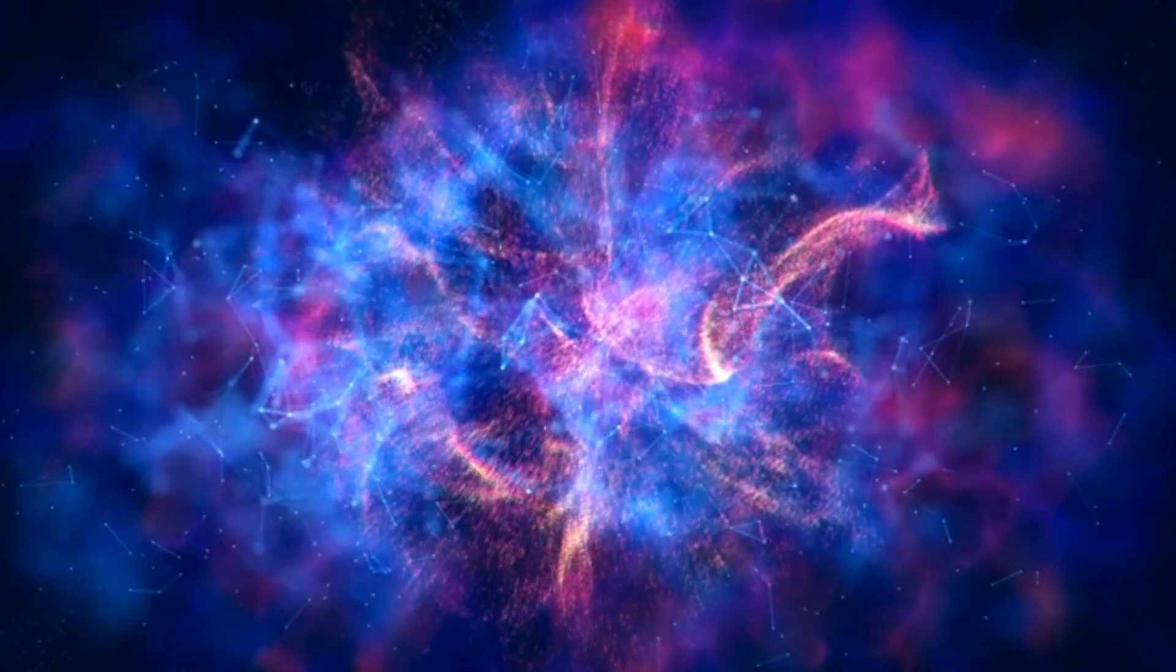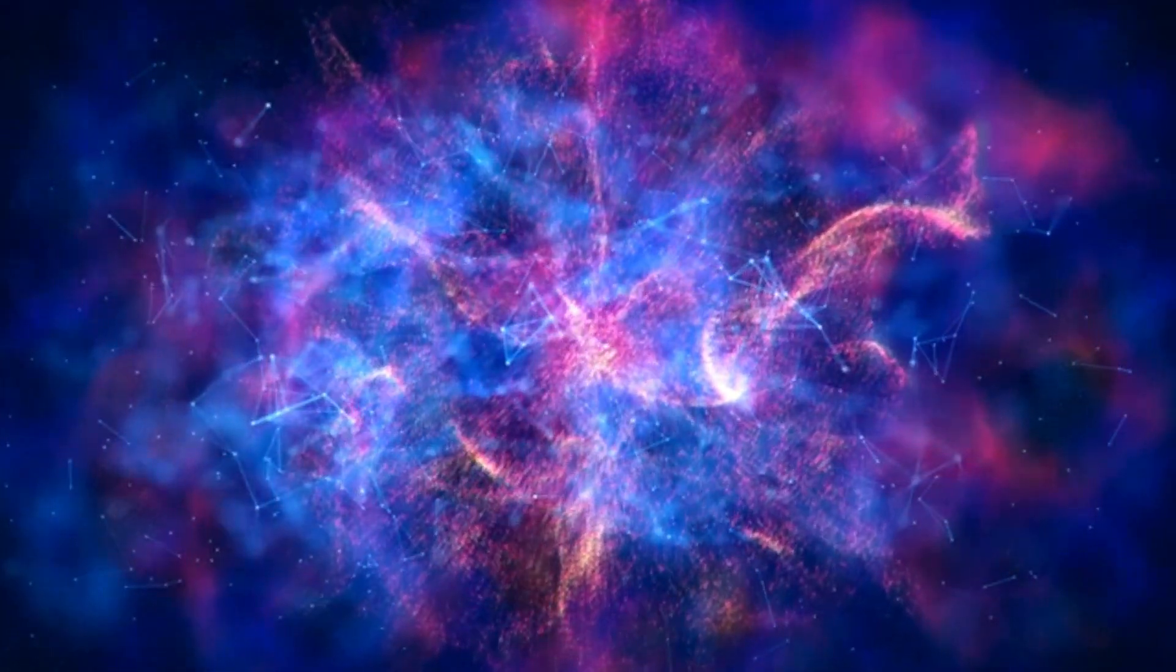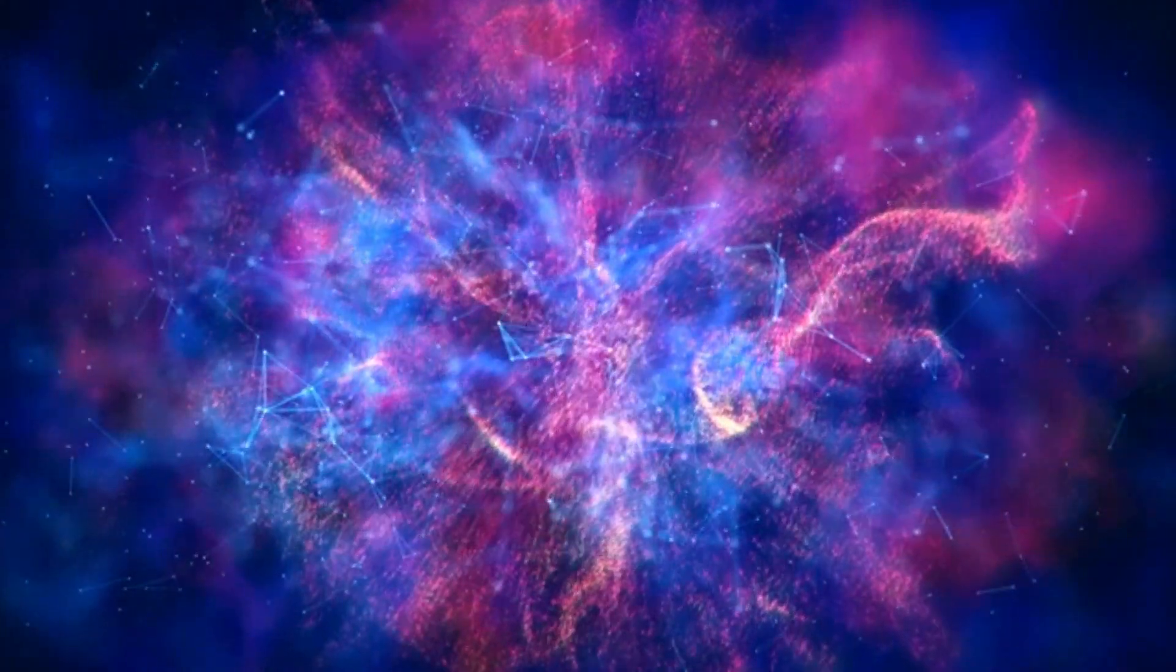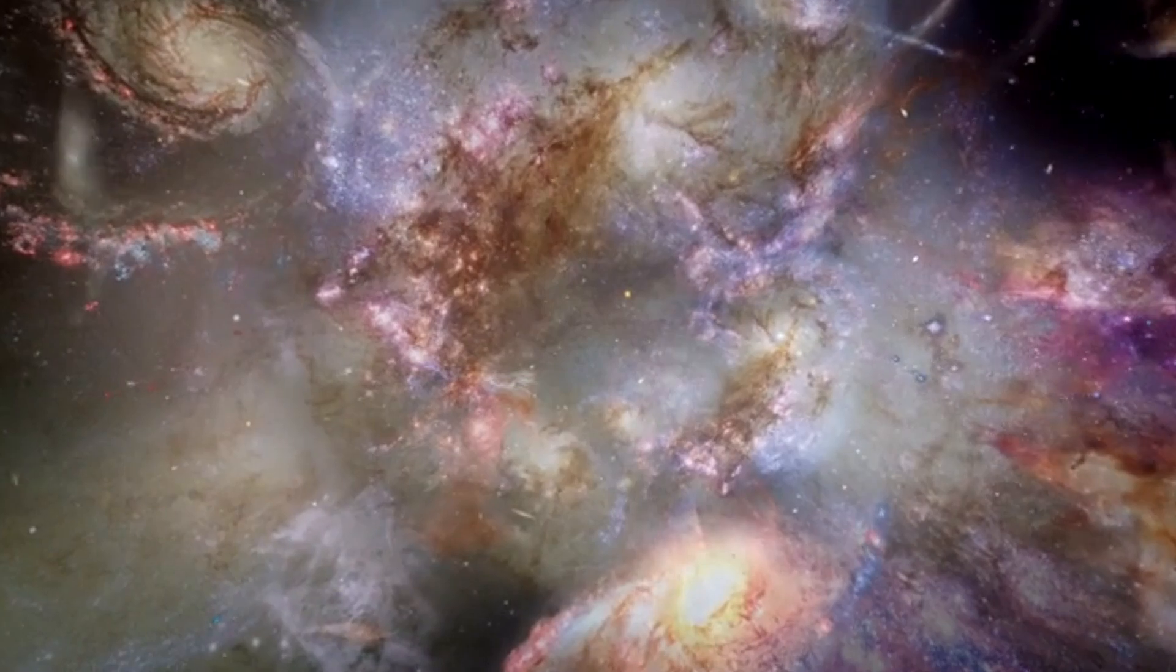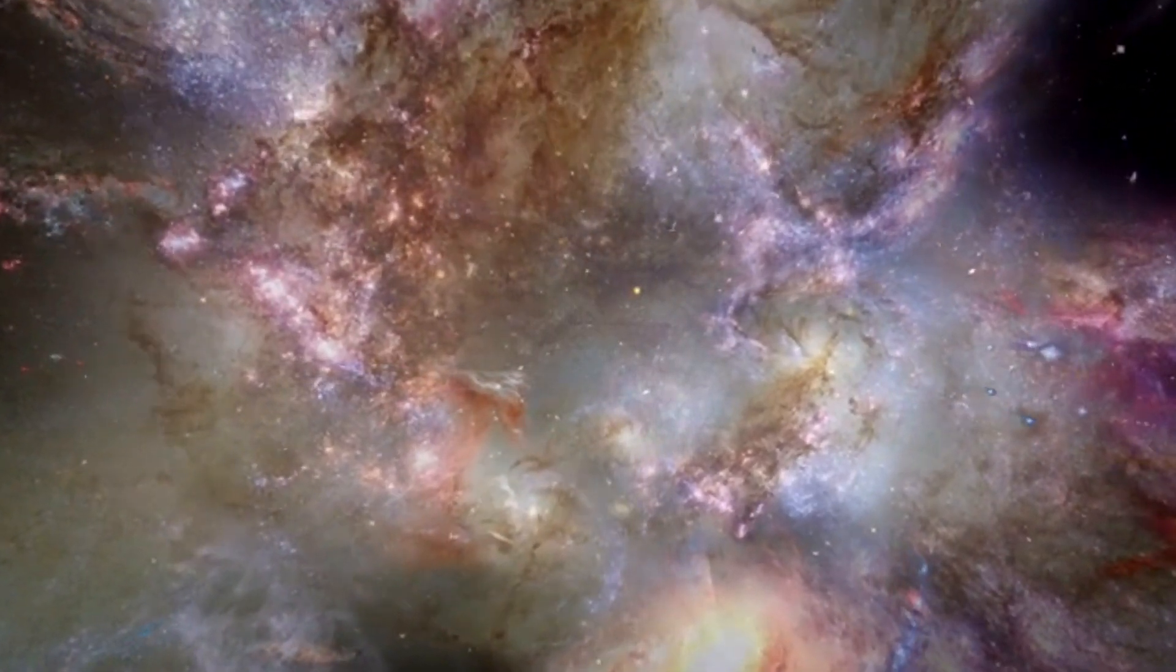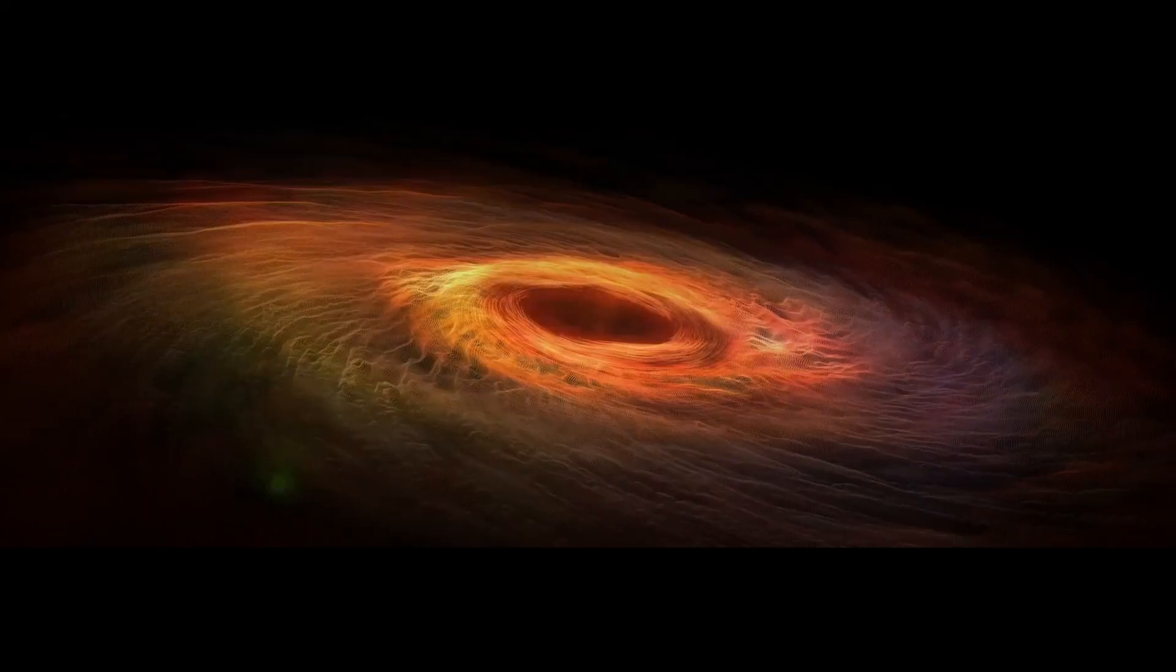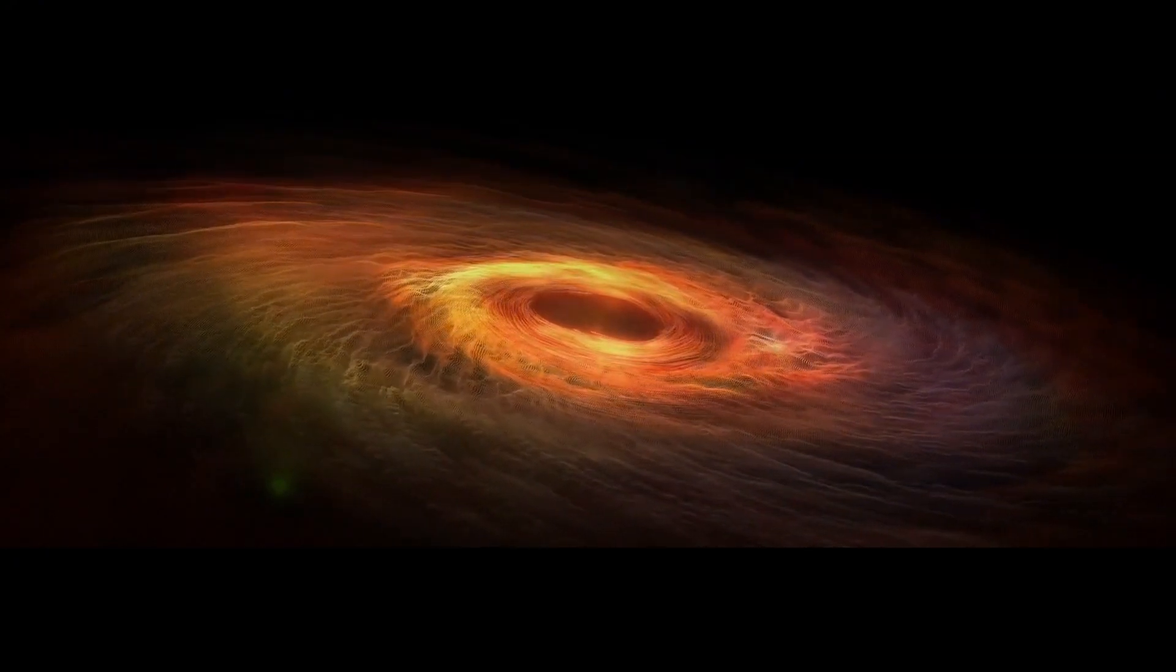Can you imagine a single star dwarfing our entire solar system? To provide some perspective on the sheer enormity of Betelgeuse, if it took the place of our sun, its edges would extend all the way to Jupiter. How can a single star achieve such colossal proportions?